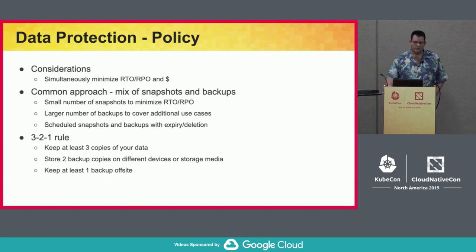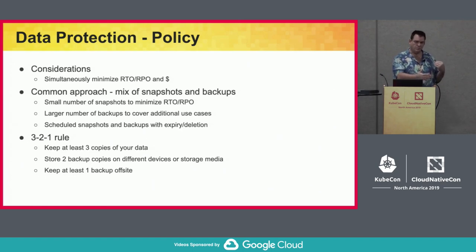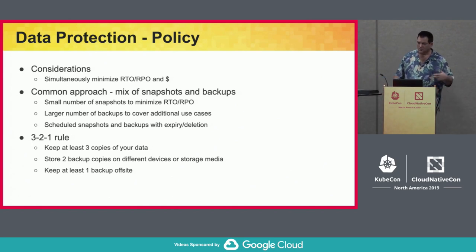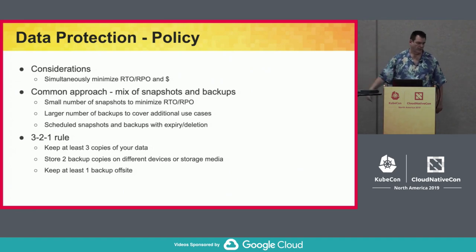When we talk about data protection policy, the main goal is minimizing RTO and RPO while also minimizing cost. A common approach is a mix of snapshots and backups — keeping a certain number of snapshots bounded by cost and storage overhead, and using backup to fill the gap. There's the often-quoted 3-2-1 rule: keep three copies of your data, store two copies on completely different kinds of media, and at least one of them is completely off-site so geographic failures don't impact it.